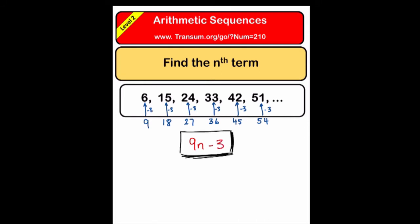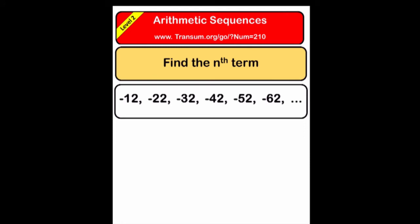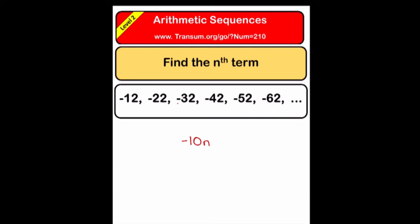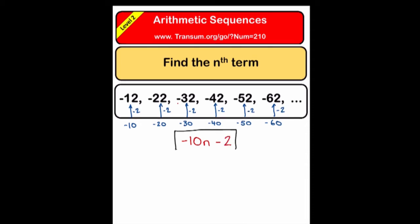Now let's look at the tricky one. This sequence has negative numbers and it seems to be decreasing, so the common difference is negative ten. Writing down the minus ten times table — minus ten, minus twenty, minus thirty — underneath our original sequence, I can see what adjustment is needed. Minus ten n is the formula for the minus ten times table, and we need to subtract a further two. So the formula in this case is minus ten n minus two. Have a go at level two of the online exercise, then come back here for level three.